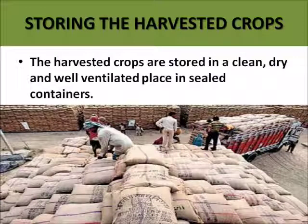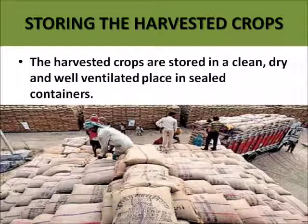The last stage is storing the harvested crops. The harvested crops are stored in a clean, dry and well-ventilated place in sealed containers. The grains need to be protected from birds, insects and rodents. Therefore, after the crops are harvested, the grains are usually stored in big granaries.